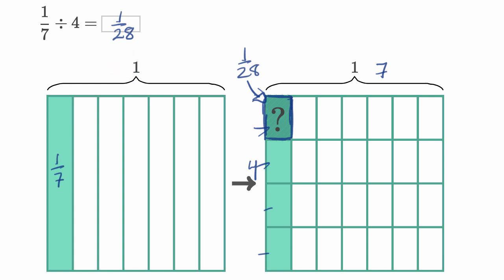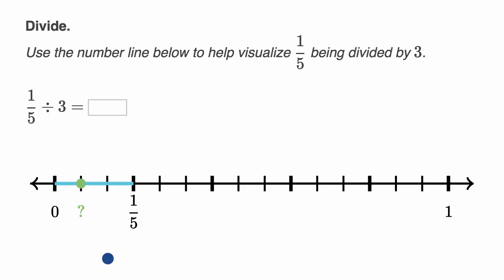Let's do another example. We're told, use the number line below to help visualize 1/5 being divided by three. So as we go from zero to one on the number line, you could divide into five equal sections, where that's 1/5, 2/5ths, 3/5ths, 4/5ths, and of course, 5/5ths is equal to one.